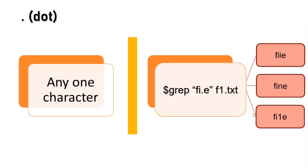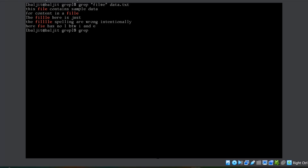The next character is dot. Dot means any one character. So 'grep fi.e' means f followed by i followed by any one character and then e. So I am looking for lines which might contain something like file, find, fire, and so on. If I write 'fi.e data.txt', this means I am looking for f followed by i followed by any one character and then e.